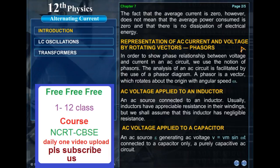AC voltage applied to an inductor. An AC source connected to an inductor. Usually inductors have appreciable resistance in their windings, but we shall assume that this inductor has negligible resistance.